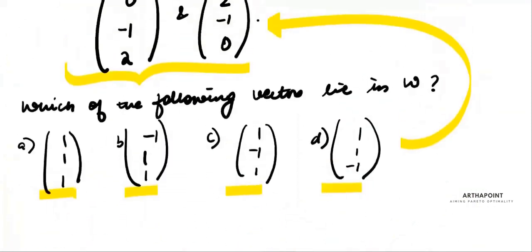So the answer to this question is C. The third vector (1, -1, 1) is spanned by the first two vectors — it has been created as a linear combination of the first two vectors.